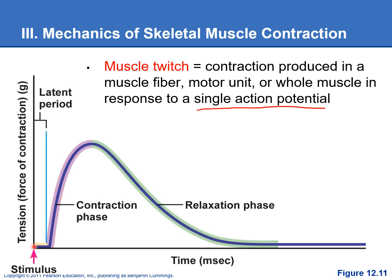What's going on in this latent period is excitation-contraction coupling. We've got to generate the action potential inside the muscle fiber, then release the calcium ions and get the cross-bridge cycle started, and then we can finally start shortening the sarcomere and getting contraction going, and then the muscle fiber will start to relax.